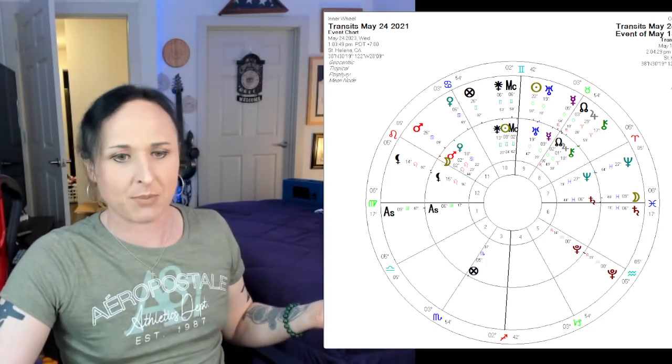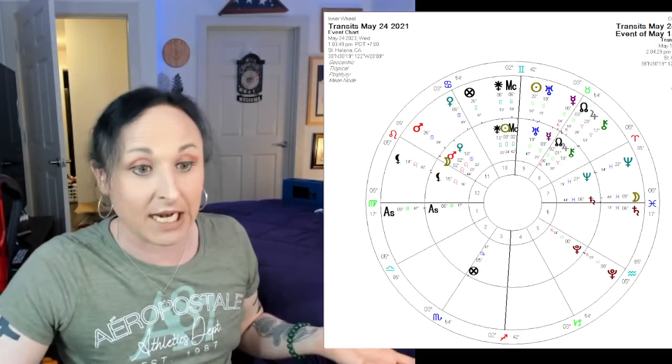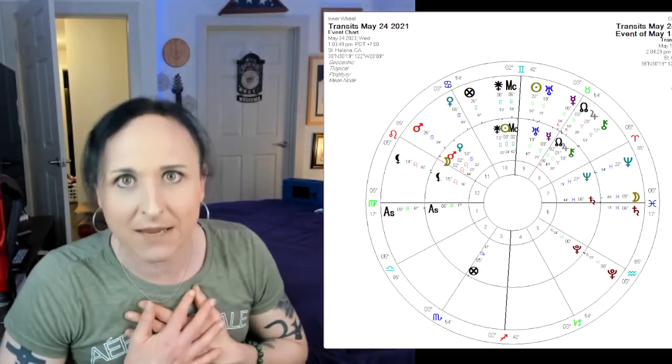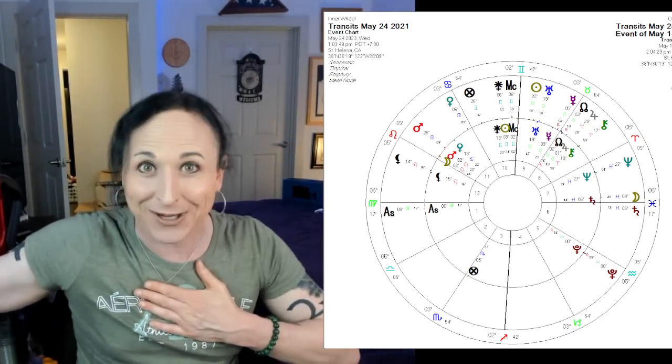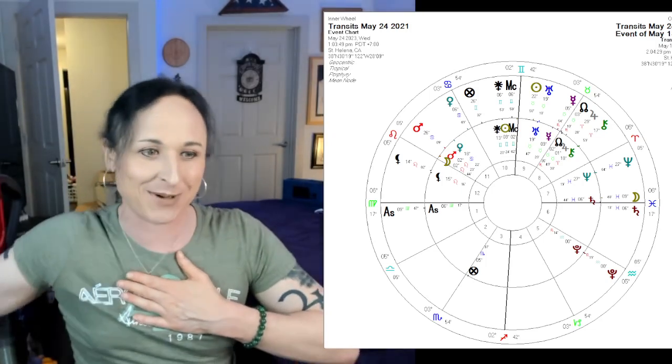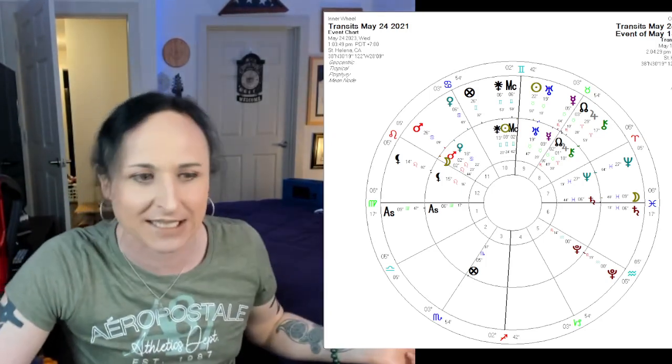When looking at specific synastry aspects, we will think of one person embodied in one planet and the other person embodied in the other. And we'll look at specific examples of that. If my Venus is square someone else's Jupiter, I am the Venus person, they are the Jupiter person. So let's get into Saturn Venus here.